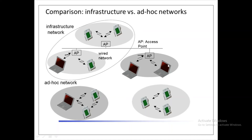In the ad-hoc network, we are not using fixed networks or access points. Ad-hoc wireless networks do not need any infrastructure to work. Each node can communicate directly with other nodes, whereas in the infrastructure network, nodes must communicate only through access points.